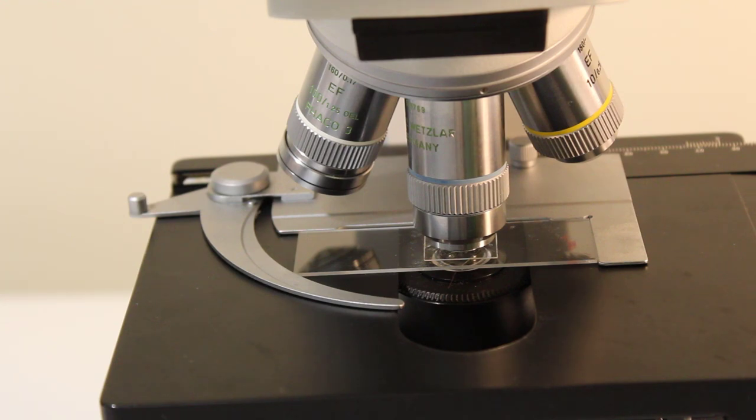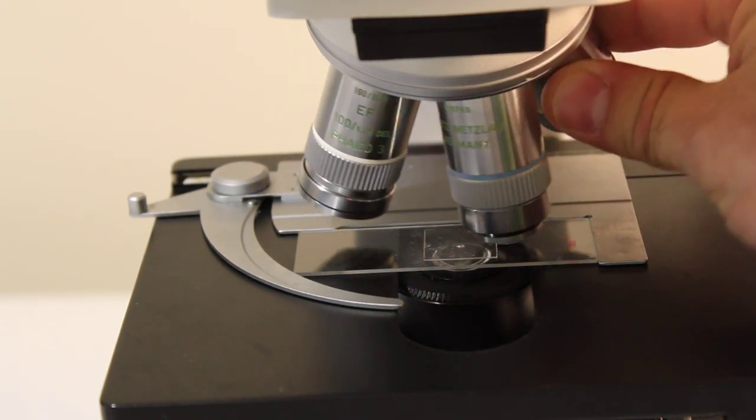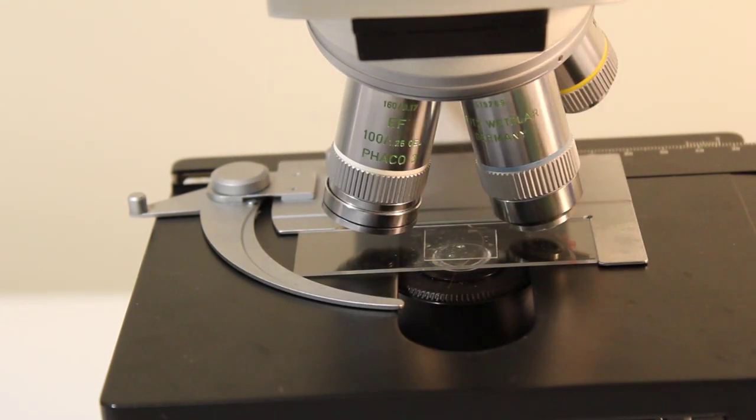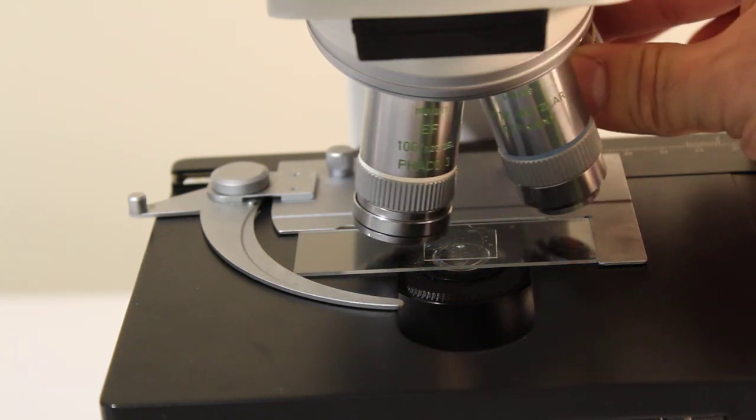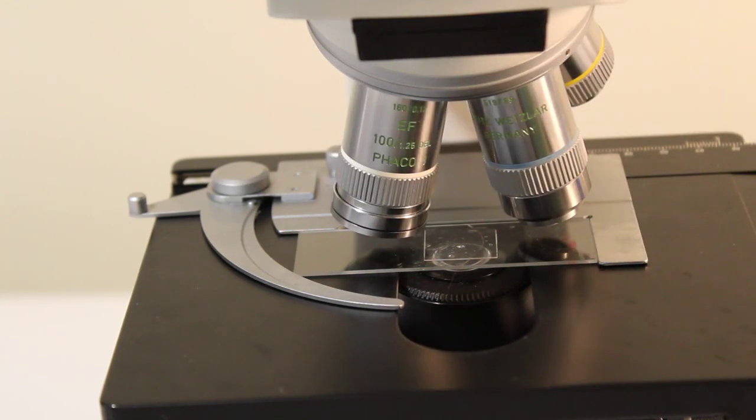Now, if you are using your oil lens, it's no different than using your oil lens under other circumstances. Simply put the drop of oil right on top of that cover slip, swing that high magnification lens into place, and you're now ready to image.